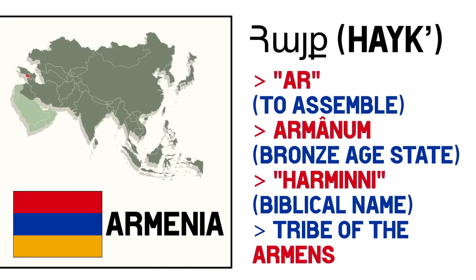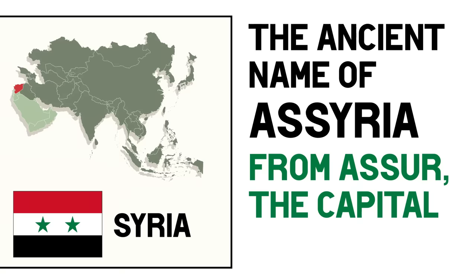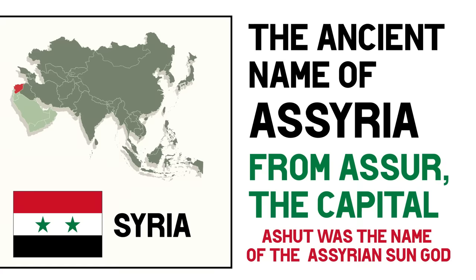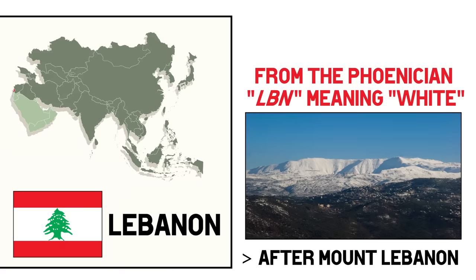Onto the Mediterranean coast, Syria. Syria's name seems to come from the ancient name of Assyria in northern Mesopotamia, which in turn derives from the ancient Akkadian word Assur — precisely the capital of the ancient Assyrian empire. It seems Assur was the name of an Assyrian god representing the sun, so maybe that could be the origin. Then Lebanon, which seems to be named after Mount Lebanon, located in the country. The name of the mountain comes from the Phoenician root Laban meaning white, in reference to the snow at the top of it.